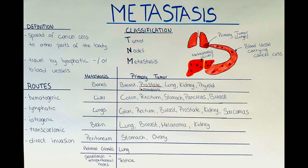Another way of metastasis is called transcelomic. This route involves the direct spread of cancer cells within body cavities such as the peritoneal cavity, the pleural cavity, or the pericardial cavity. It occurs when cancer cells penetrate the surfaces of these cavities and spread to other organs within them. Ovarian cancer, for example, often spreads through the peritoneal cavity.